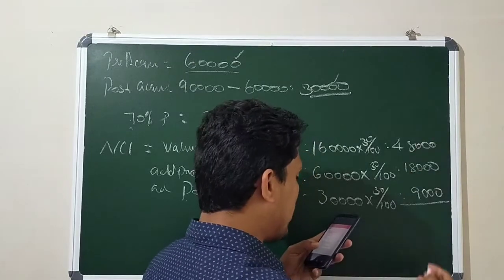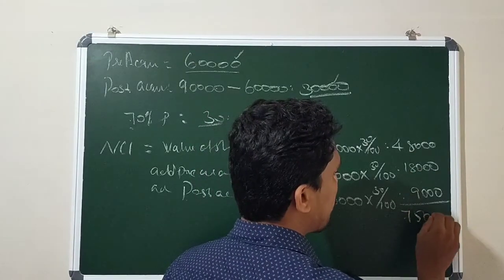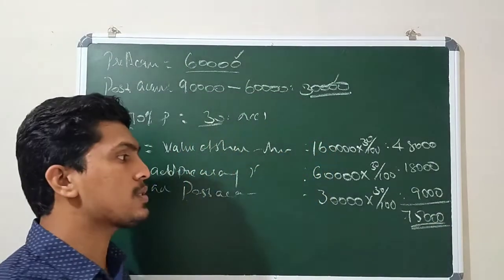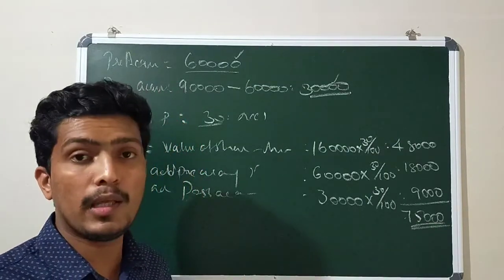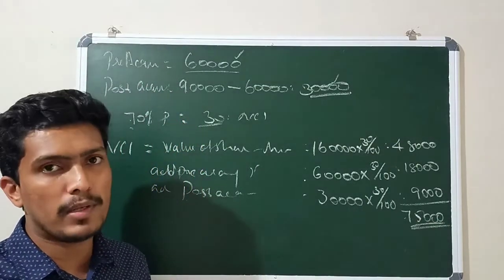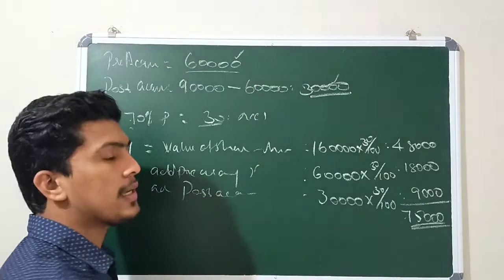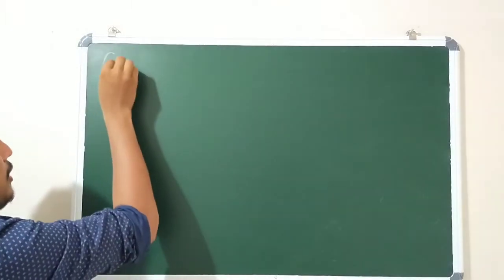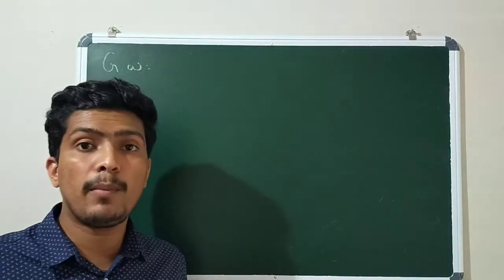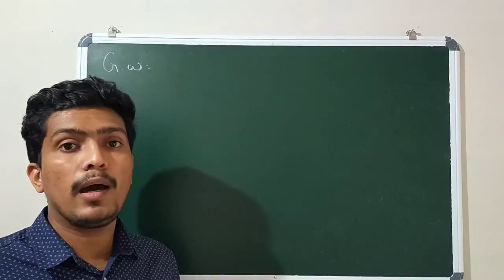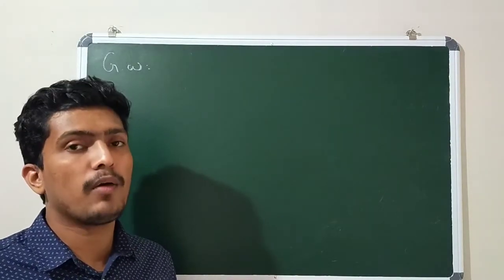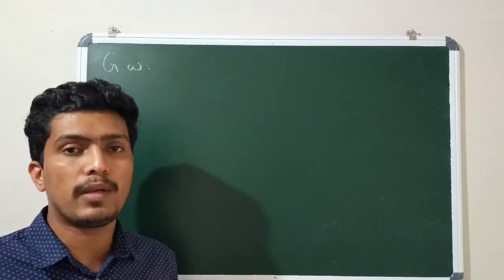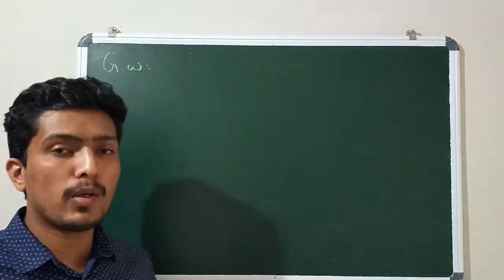Adding all components: 48,000 + 18,000 + 9,000 = 75,000 total NCI. So the NCI is equal to 75,000. Next, we will calculate goodwill. There are three equations available for goodwill calculation. The first is when the parent company purchases 100% of subsidiary. The second is when it purchases more than 50% but below 100% of the subsidiary.